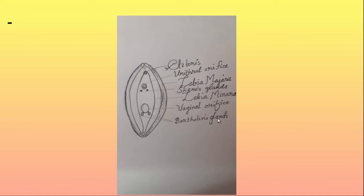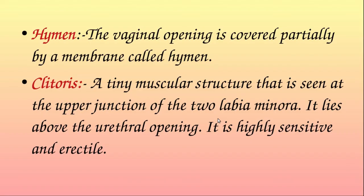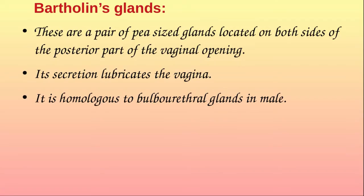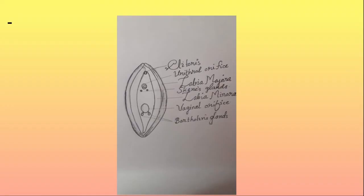The Skene's glands are located posterior to the urethral orifice. Their secretion lubricates the area and also has antimicrobial properties that help prevent urinary tract infections.